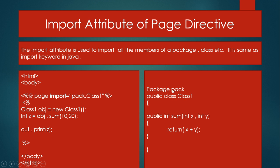This class resides inside pack.class1, and here we import it by writing the package name 'pack' and then the class name. Using the declaration tag, we call class1, create an object, and call the sum method passing arguments 10 and 20. The result 30 is assigned to variable z, and with the implicit object 'out', we call the print method to print the value of z to the screen. This is the functionality of the import attribute of the page directive.